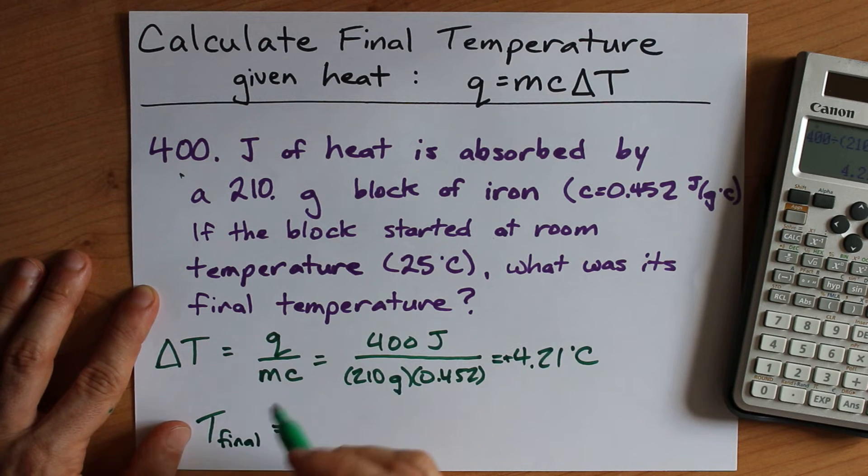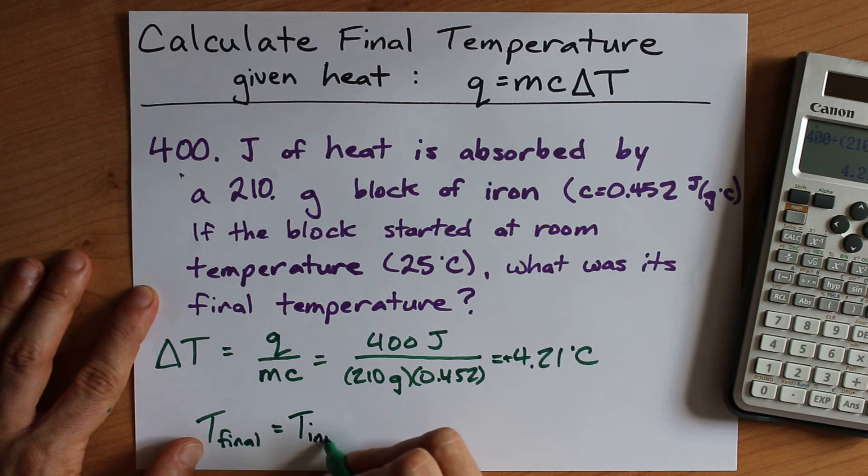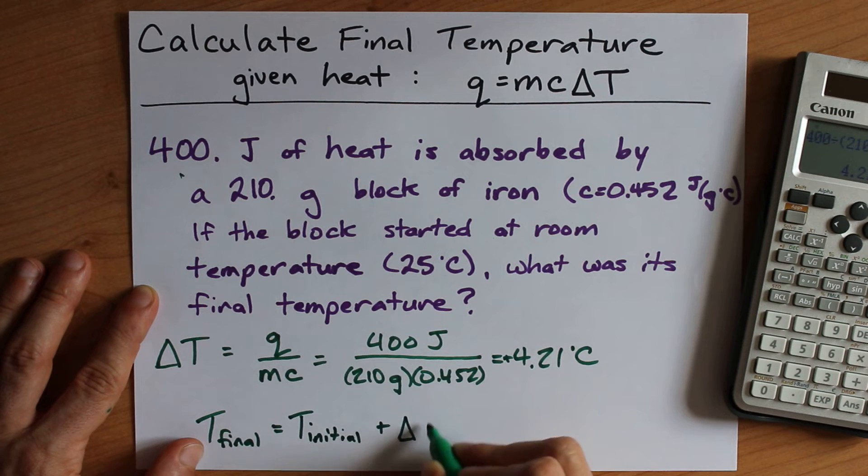But the official formula for this is that delta t is final minus initial. And so, if you want to calculate t final, you're going to take the initial temperature and add on your delta t.